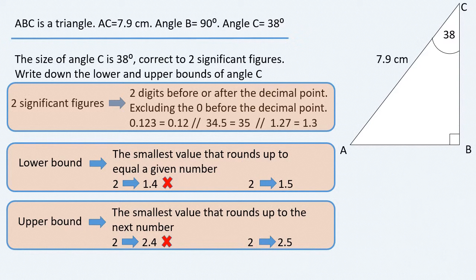Now, returning to our original question, the lower bound for 38, which is the smallest value that rounds up to 38, is 37.5. And the upper bound to 38, which is the smallest number that can be rounded up to 39, is 38.5.